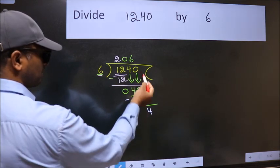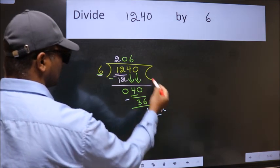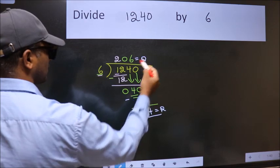No more numbers to bring it down. So we stop here. This is our remainder and this is our quotient.